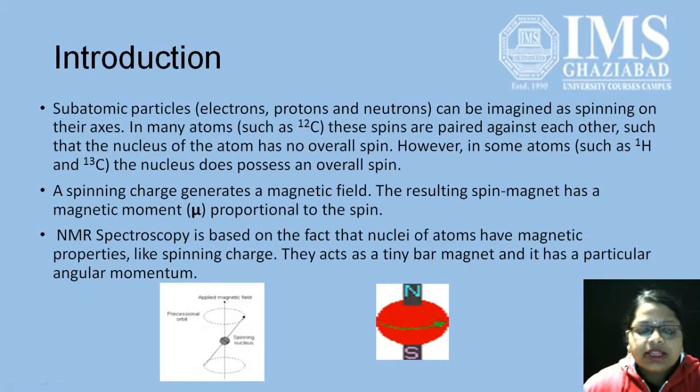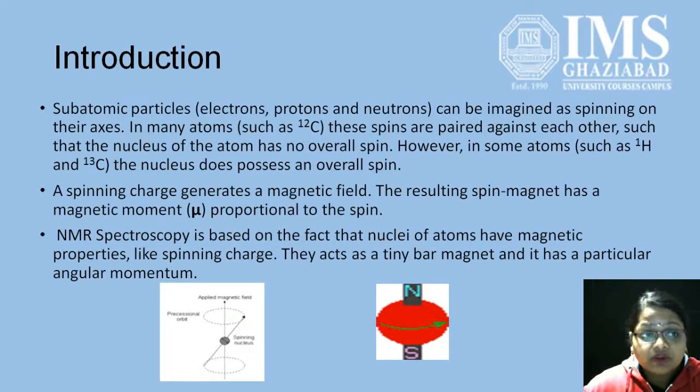NMR is the study of the nucleus of protons. The basis of this spectroscopy is that we can consider subatomic particles like electrons, protons, and neutrons as spinning on their axis. When the nucleus is spinning, it creates a magnetic field around itself. In many atoms, these spins are paired against each other such that the nucleus has no overall spin. However, in some atoms, the nucleus possesses an overall spin which creates a magnetic field. The resulting spin magnet has a magnetic moment, represented by mu, which is proportional to the spin.